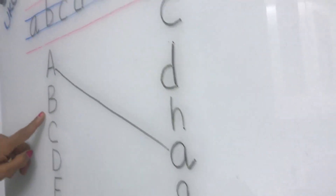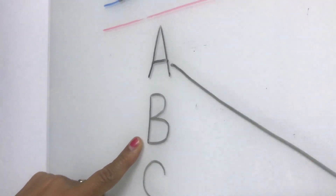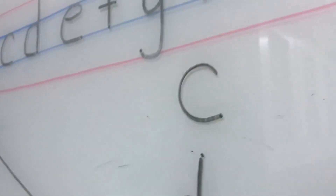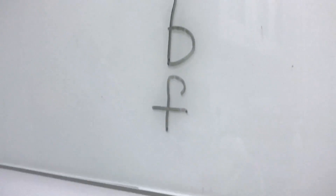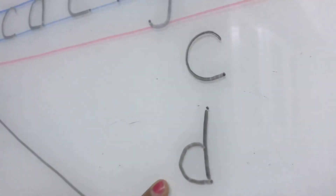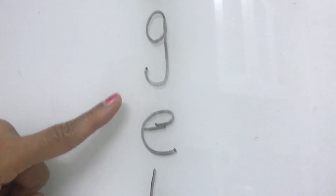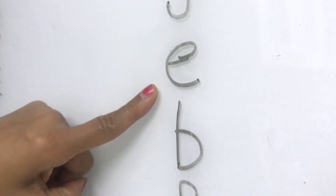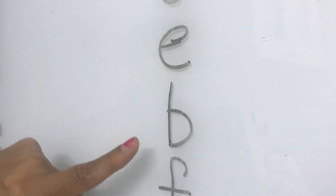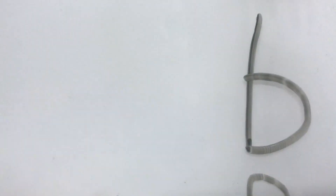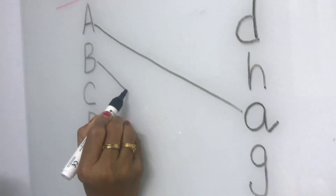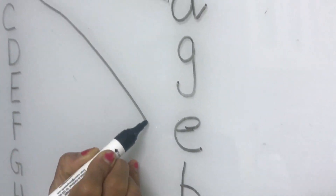Now what is this? This is capital B. We have to match this capital B with small B. Where is the small B children? This capital B we should match with small B.